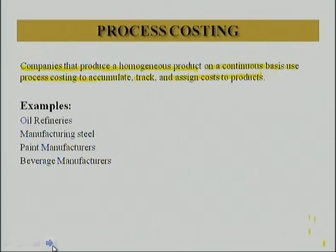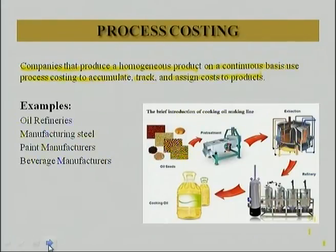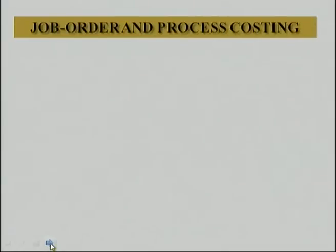For example, oil refineries, steel manufacturing, paint manufacturers and beverage manufacturers — these are industries which usually produce the same nature of products. Their quantity and packaging may differ, but at mass level the nature of the product remains the same.